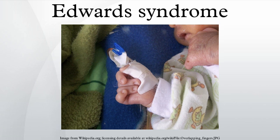Signs and symptoms: Children born with Edwards syndrome may have some or all of these characteristics — kidney malformations, structural heart defects at birth, intestines protruding outside the body, esophageal atresia, intellectual disability, developmental delays, growth deficiency, feeding difficulties, breathing difficulties, and arthrogryposis.